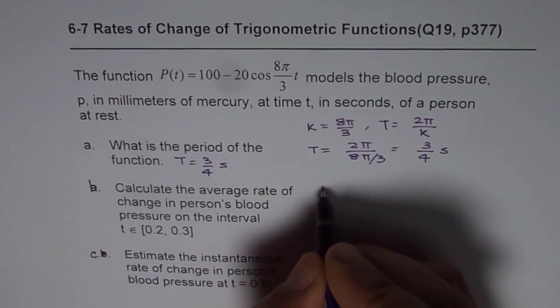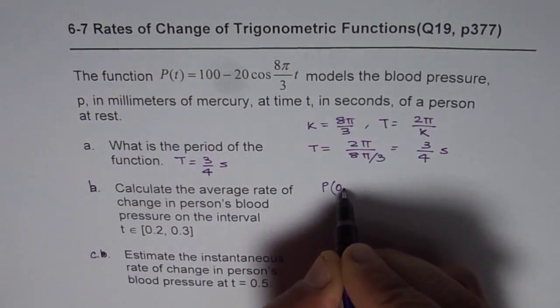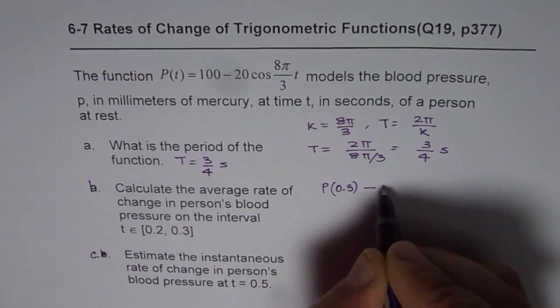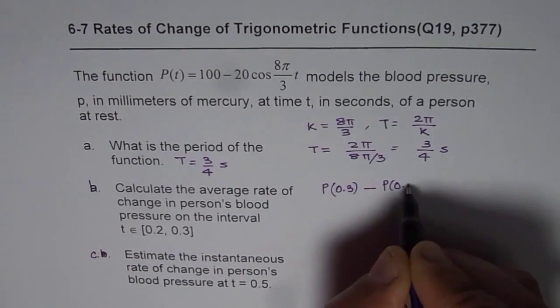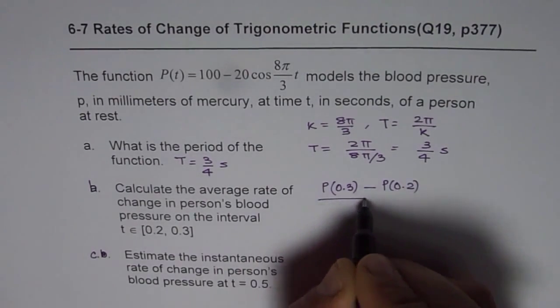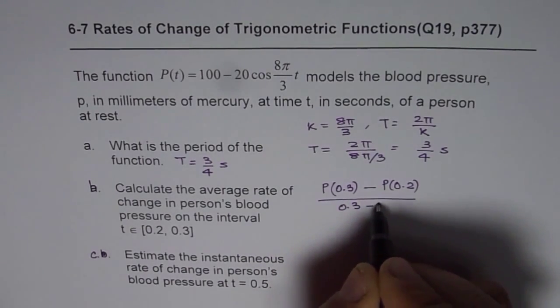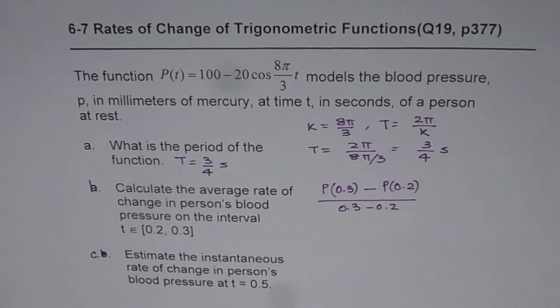So basically we will be calculating P(0.3) minus P(0.2) divided by 0.3 minus 0.2. So that is what you have to find.